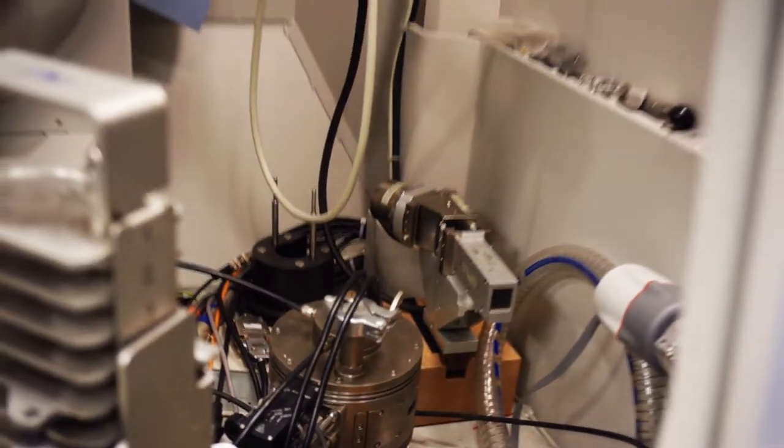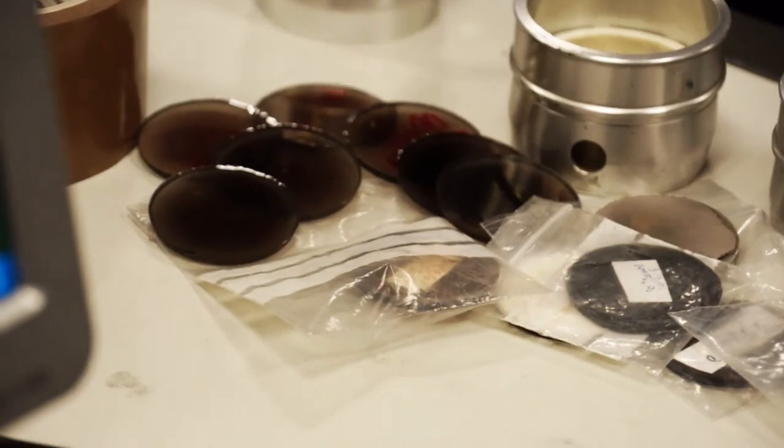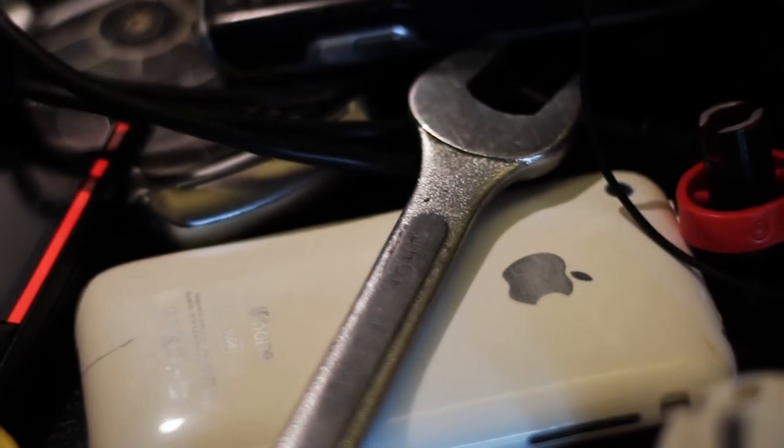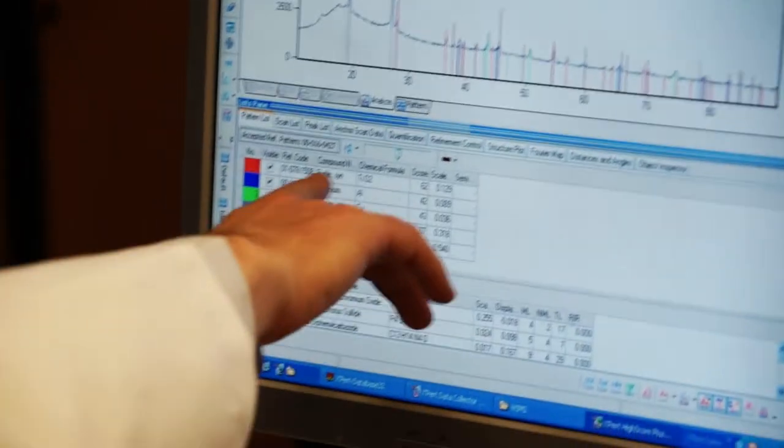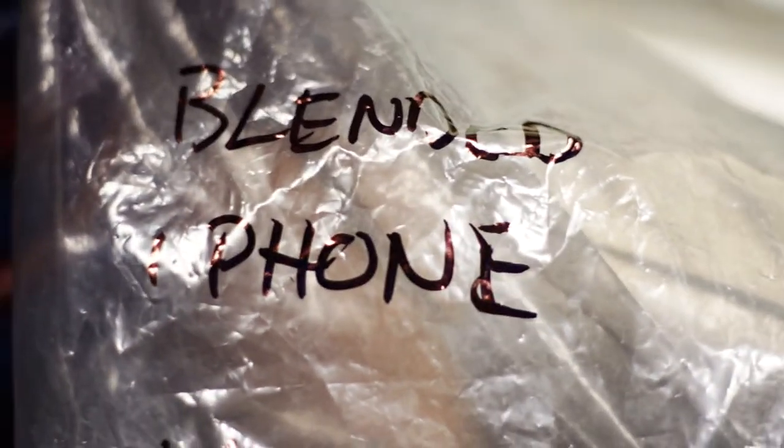So this technique, X-ray diffraction, is what we use when we try and identify what the compounds are, the crystalline compounds are, in a material. And in this instance we have been looking at a blended iPhone, which we put in a food blender so we made it nice and homogeneous and all crushed up.